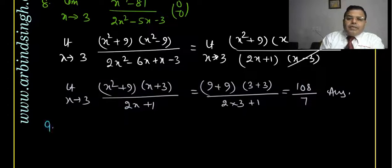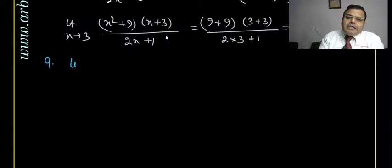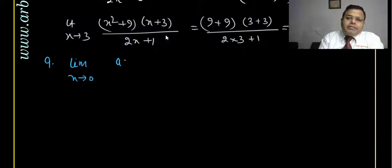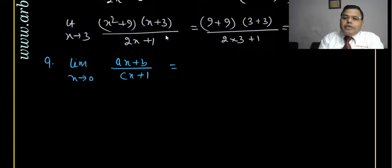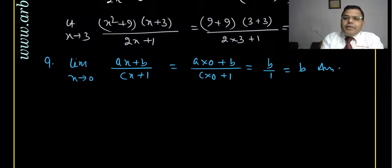Question 9: limit as x tends to 0 of (ax + b)/(cx + 1). There is no problem here — substituting x = 0 directly gives (a·0 + b)/(c·0 + 1) = b/1 = b, where a and b are constants. That is the answer.